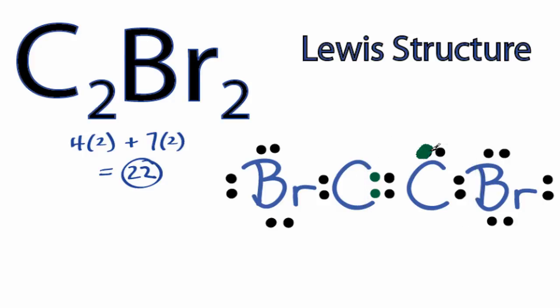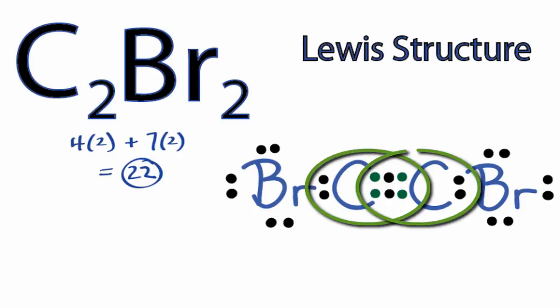So let's take these two valence electrons here and share them to form a triple bond. Now both carbons have eight valence electrons and we again are still only using the 22 valence electrons we have for the C2Br2 Lewis structure.